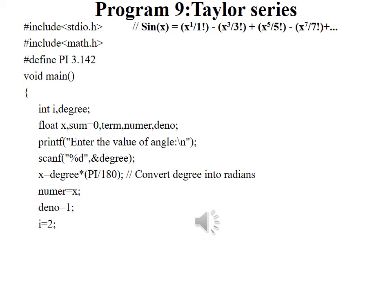We can compute sin x using Taylor series given by sin x is equal to x to the power 1 divided by 1 factorial minus x cubed divided by 3 factorial plus x to the power 5 divided by 5 factorial minus x to the power 7 divided by 7 factorial and so on.